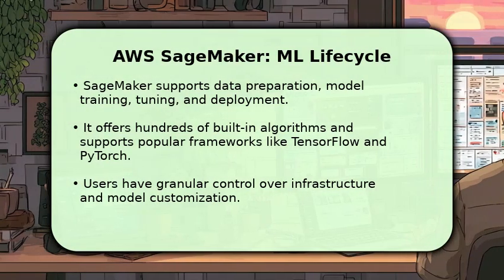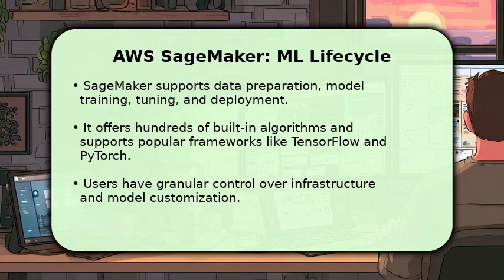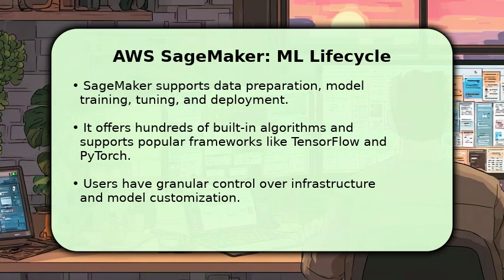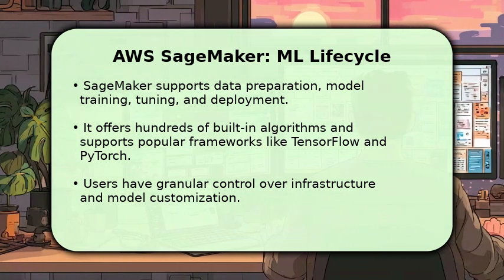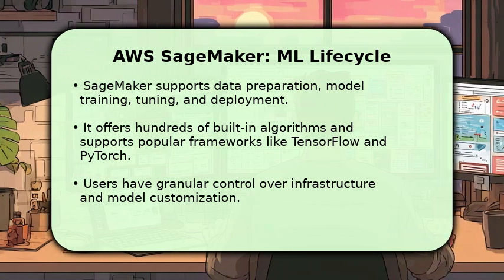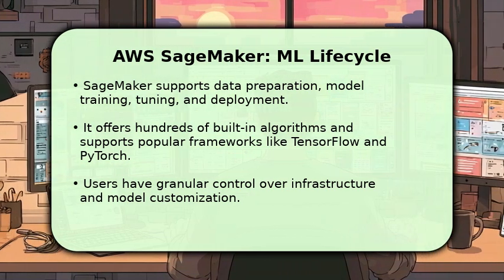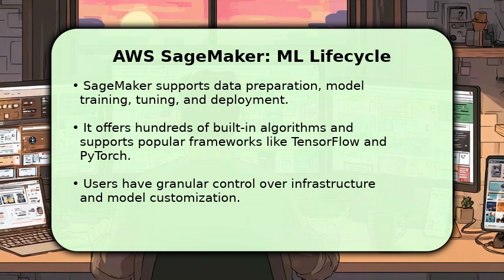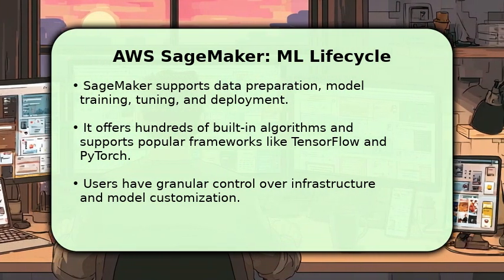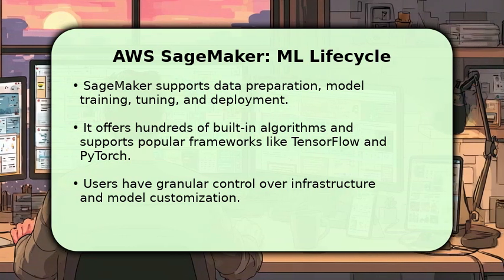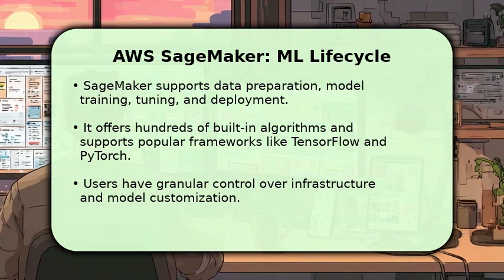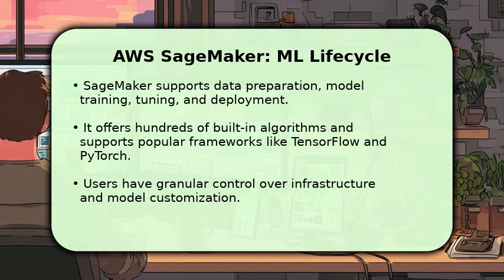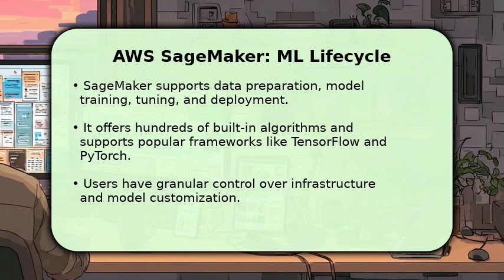AWS SageMaker provides a comprehensive environment for the entire machine learning lifecycle. It empowers data scientists and developers to prepare data, train models using hundreds of built-in algorithms or custom code, and then deploy them at scale. You gain granular control over your infrastructure, allowing for highly customized solutions, whether you're working with TensorFlow, PyTorch, or Scikit-Learn. SageMaker offers the flexibility and tools needed for complex machine learning workflows.